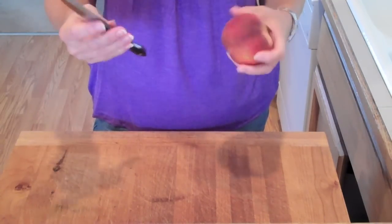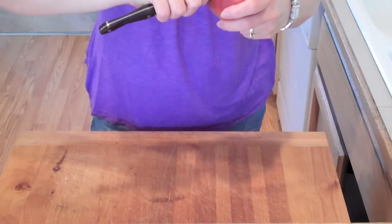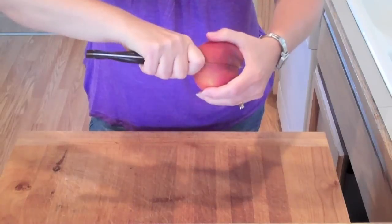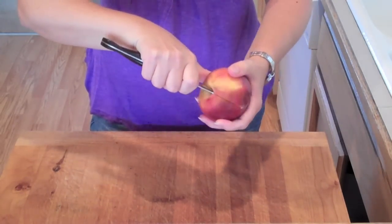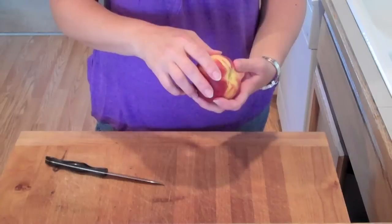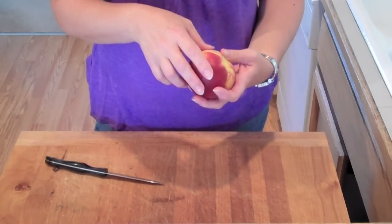So I start with a sharp knife and at the very top begin making a cut and I rotate all the way around until my cut meets the other side. Once I've made my cut all the way around the peach,